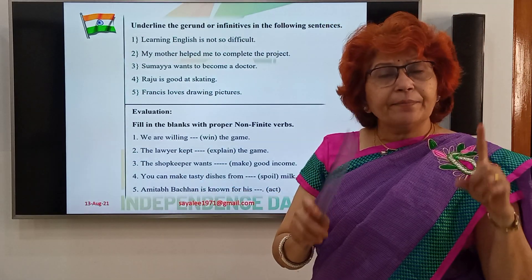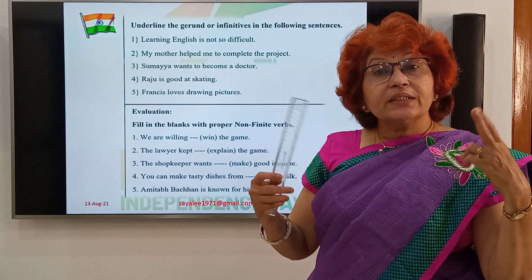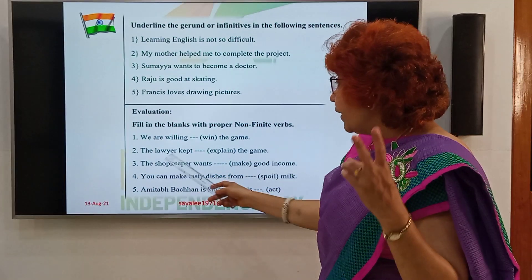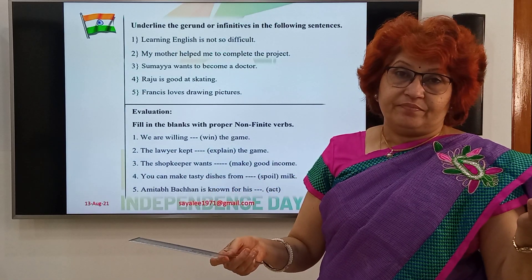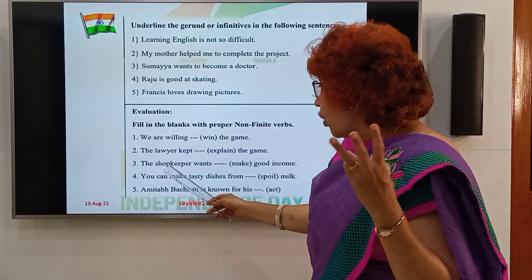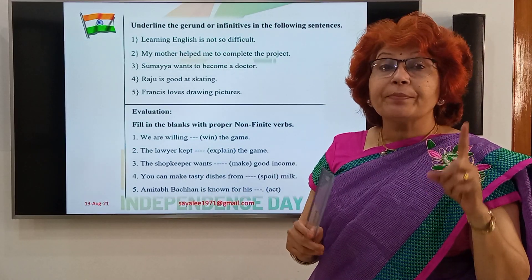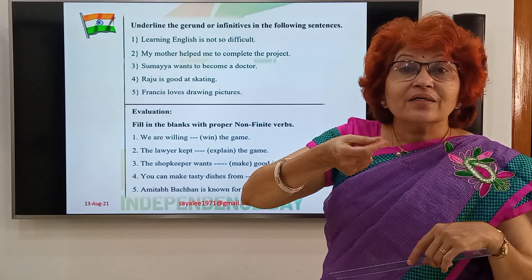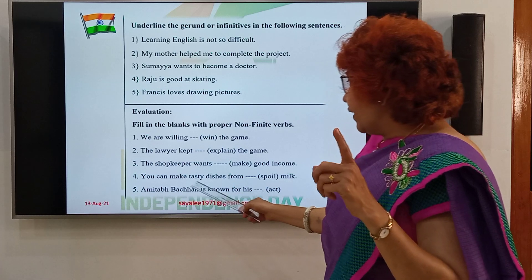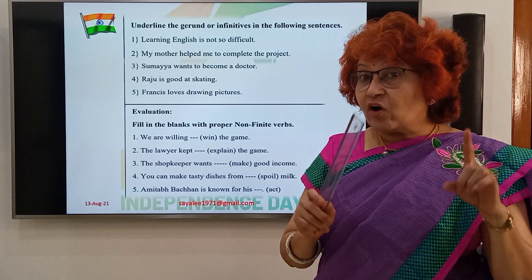The lawyer kept explaining the game — 'explaining' here is a non-finite verb. It can be a present participle or a gerund depending on its function. The shopkeeper wants dash good income — here an infinitive is needed: The shopkeeper wants to make good money or good income. So 'to make' is the infinitive.